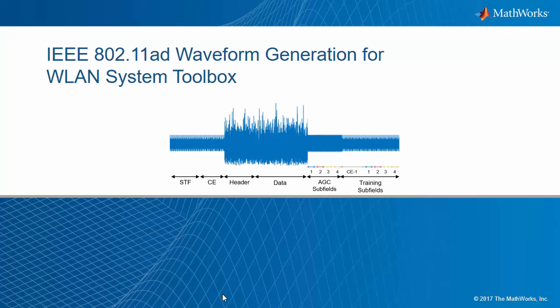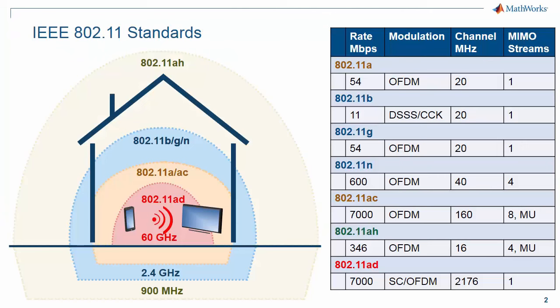This video introduces 802.11AD waveform generation for wireless LAN system toolbox. Here we examine 802.11AD and demonstrate how you can use wireless LAN system toolbox to generate a standard compliant waveform and simulate spectral emission mask testing. The most commonly deployed standards are 802.11A, B, G, N, and AC. They operate in the 2.4 GHz or 5 GHz band with a channel bandwidth between 20 and 160 MHz. 802.11AH operates in the 900 MHz band, allowing links to penetrate walls and floors and span distances up to 1 km. 802.11AD is intended for high-data, short-range communications, for example streaming video between a phone and TV. It operates in the 60 GHz band where plenty of bandwidth is available, allowing for throughput up to 6.9 Gbps over a single spatial stream.